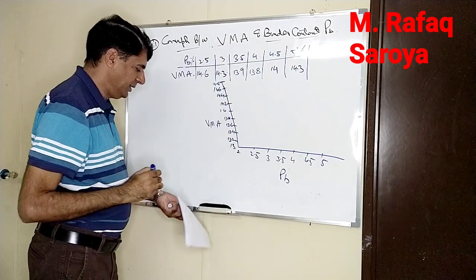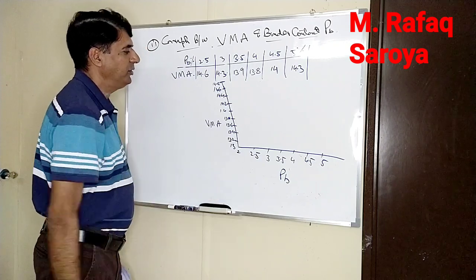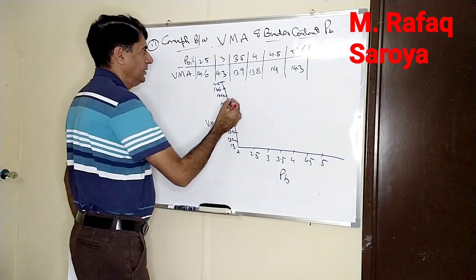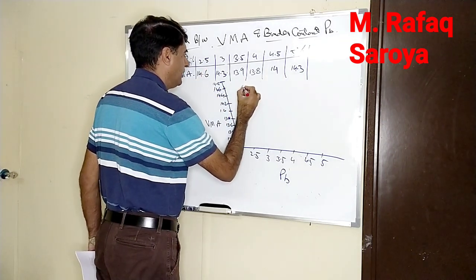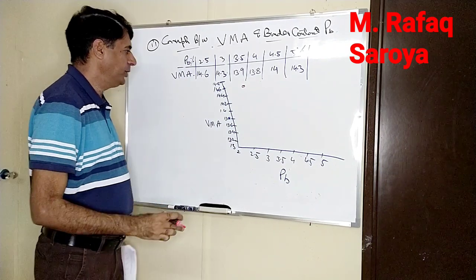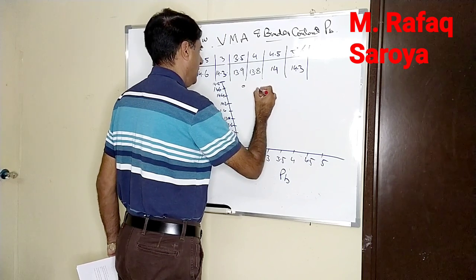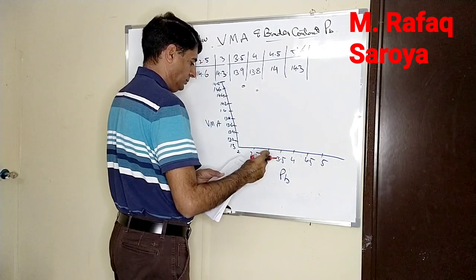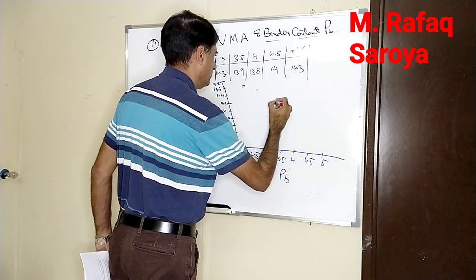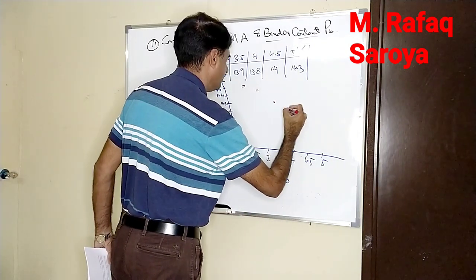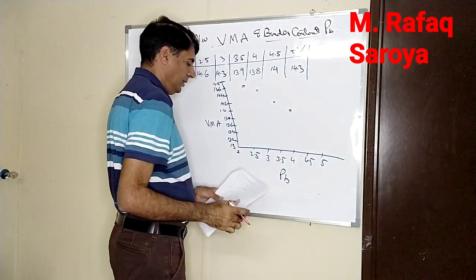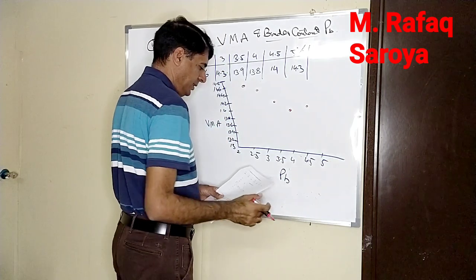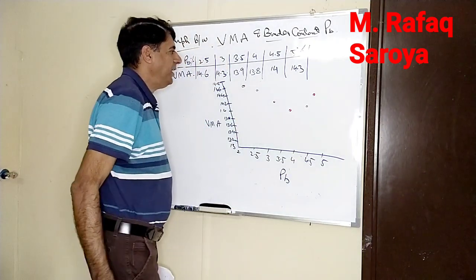Now from the selected value, when my binder content is 2.5 percent, the value is 14.6. The plot point will come at this point. With 3 percent it is 14.3, come at this point. With 3.5, it's 13.9, next 13.8. With 4.5 percent it's again rising to 14, and with 5 percent it is 14.3. It would be like this when these points are joined.